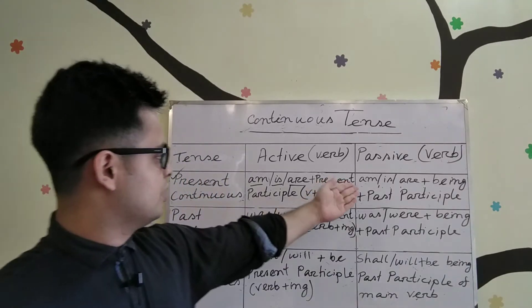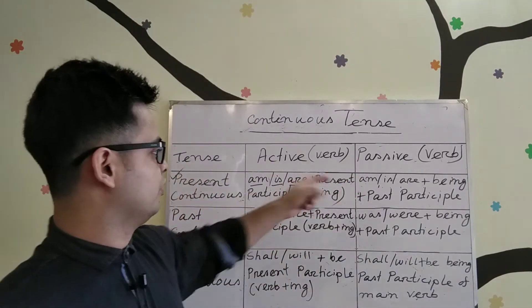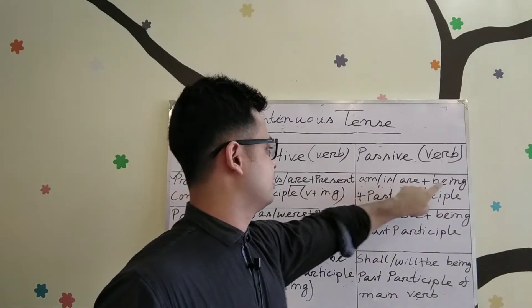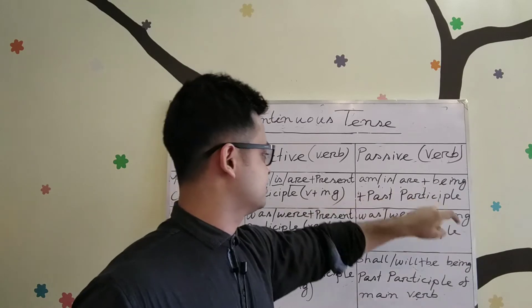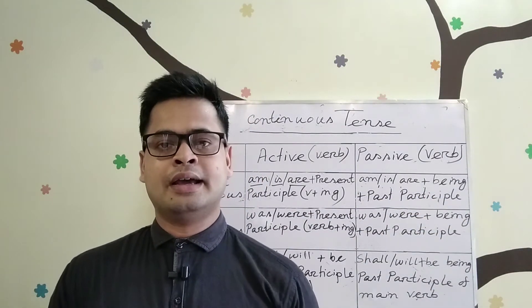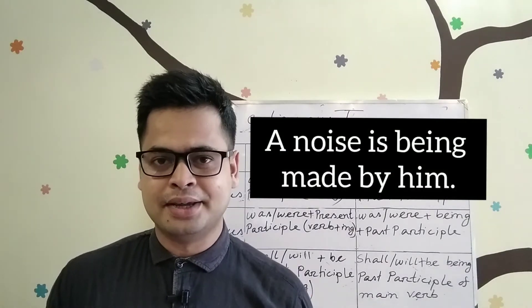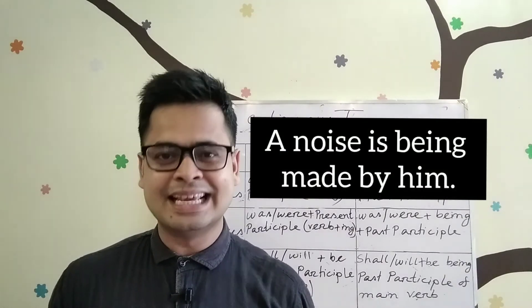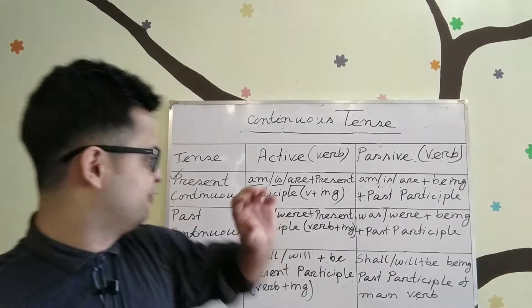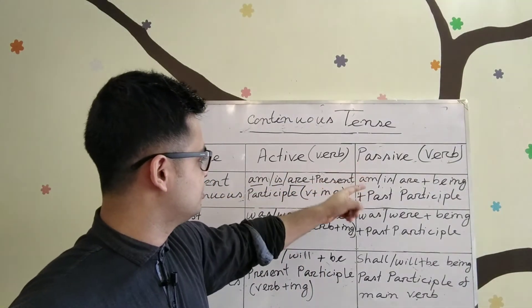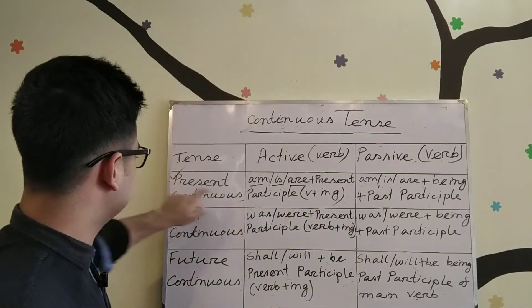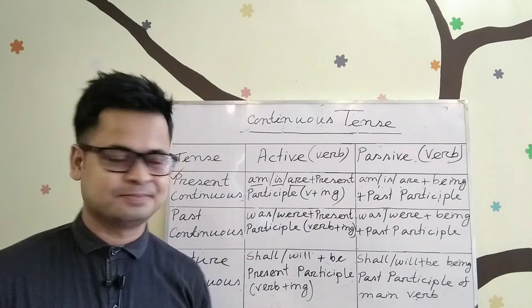In passive voice for present continuous tense, we use 'am/is/are' plus 'being' plus the past participle of the main verb. For example: 'A noise is being made by him.' 'Is being made' is the verb form used when making passive voice in present continuous tense.